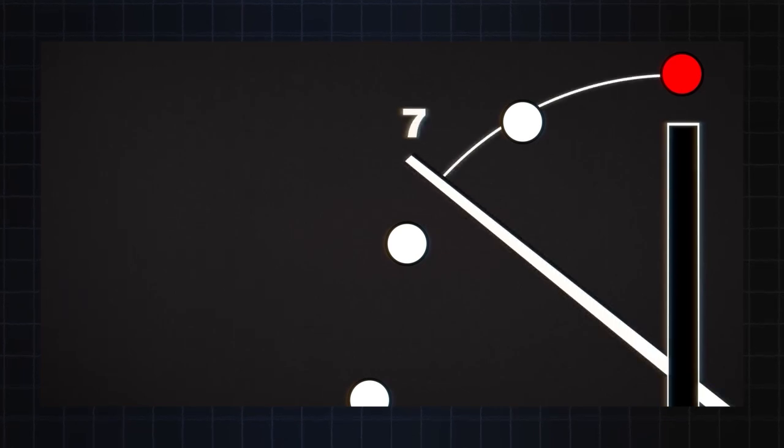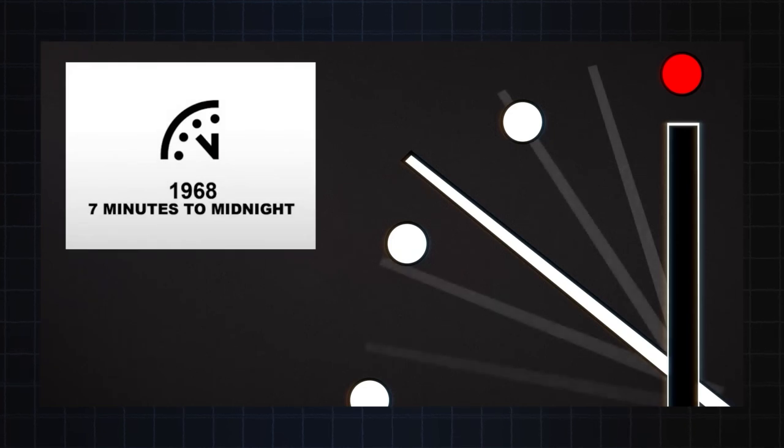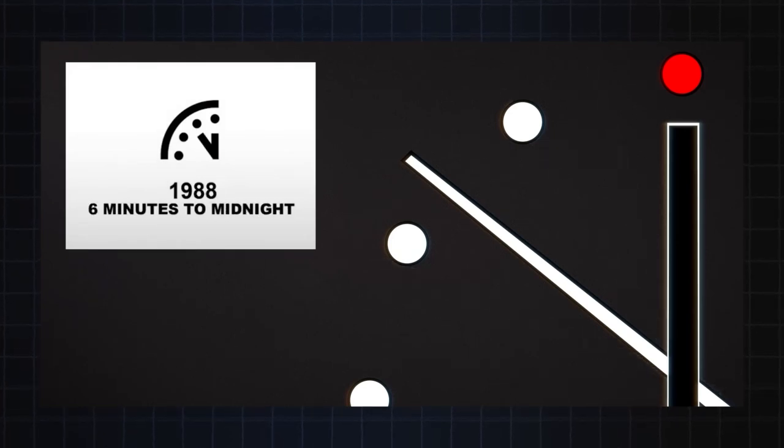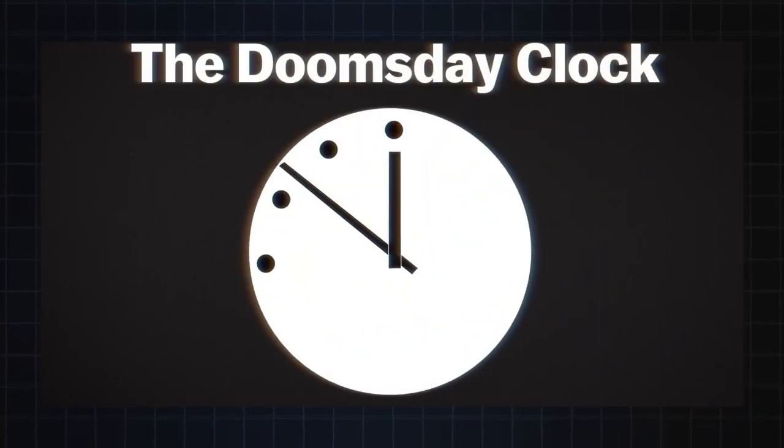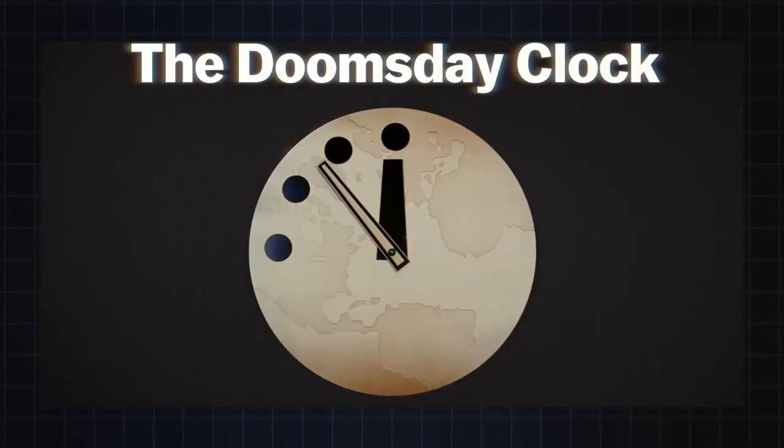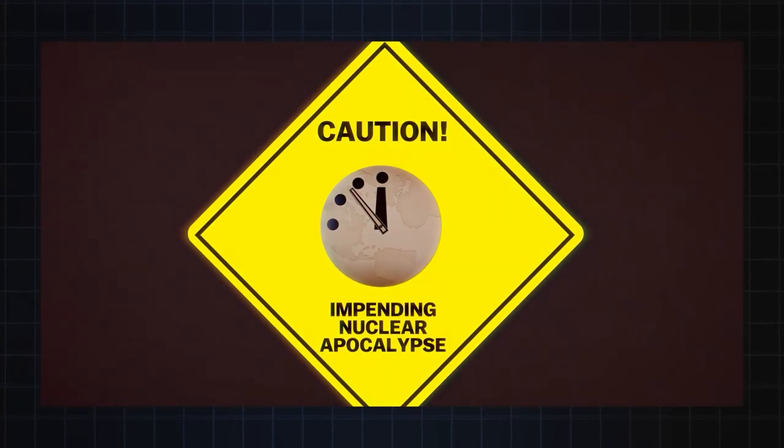It was seven minutes to midnight, or seven symbolic minutes from the destruction of all mankind. Since then, the clock has moved backwards and forwards in response to global events. Recently though, it's been generally moving forwards. Closer to midnight. Closer to the end.